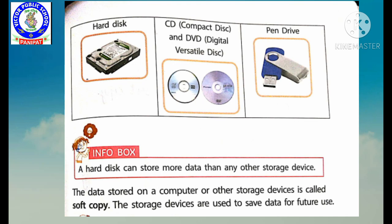Ek hard disk can store more data than any other storage device. Hard disk mein sabhi devices se zyaada data store ho sakta hai. The data stored on a computer or other storage device is called soft copy. Jo bhi data hum computer mein save karte hain, use hum soft copy kehte hain, because hum use touch nahin kar sakte. Agar hum use printer se print out nikalwaaenge, to hum use hard copy bolenge. The storage devices are used to save data for future use.